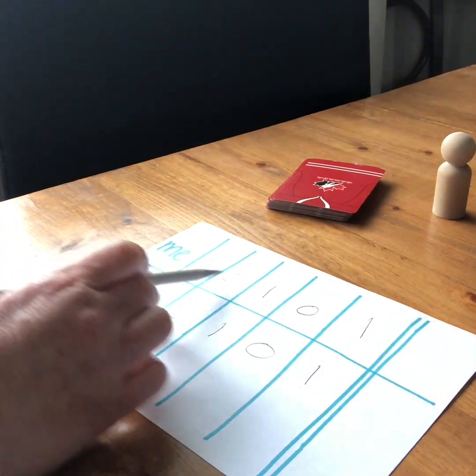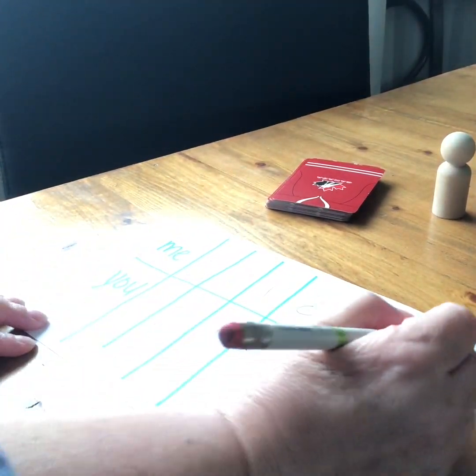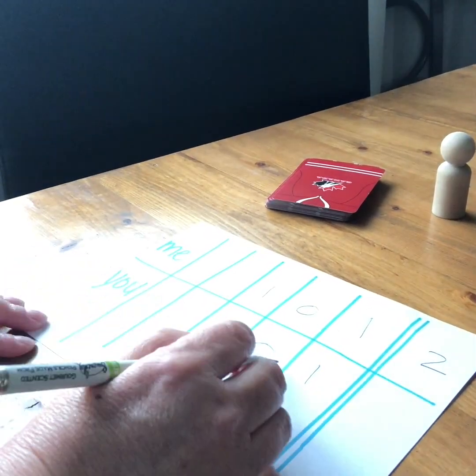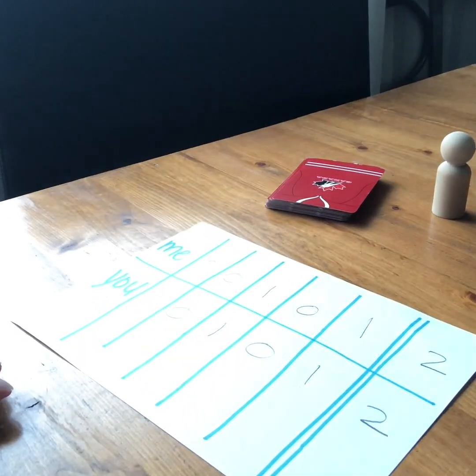So after five rounds, you total up the scores. I have a score of 2, and so does my partner, so we tied for this round.